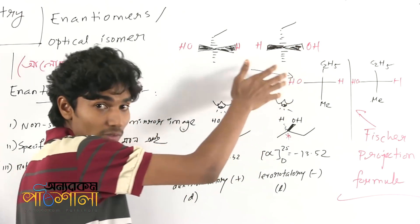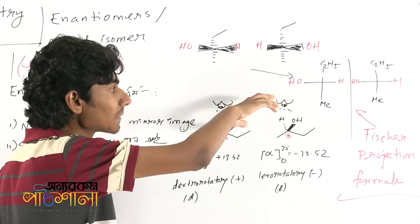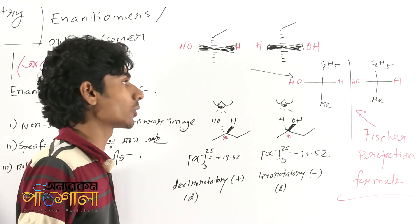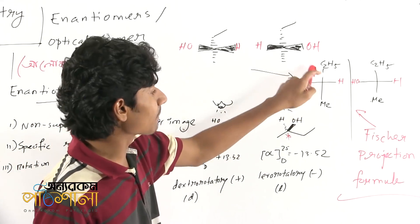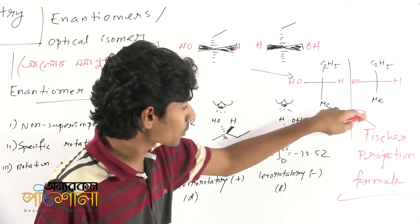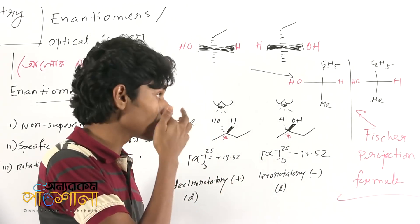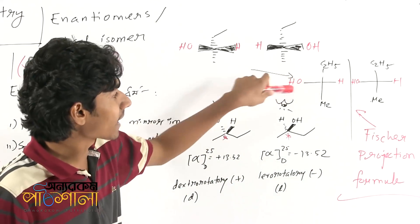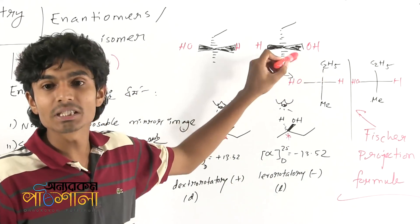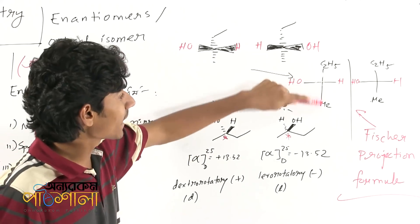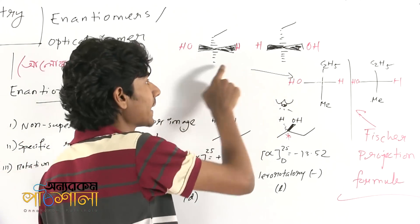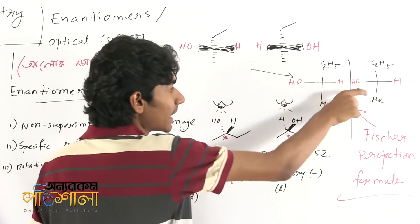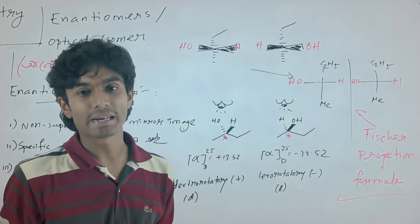This is a 3D formula for the 2D representation, so this is the orientation. We use the Fisher projection formula, so we can use this formula. This is the horizontal mean and the vertical mean by the plane.